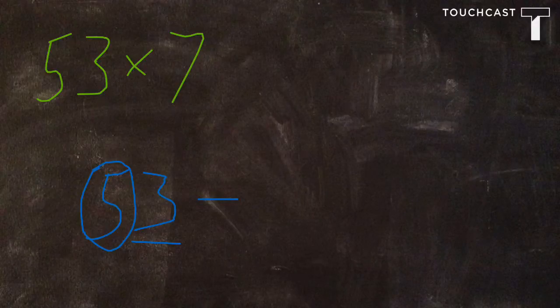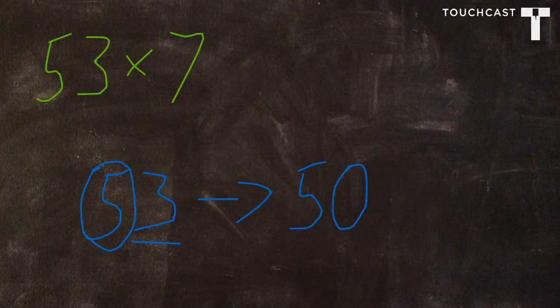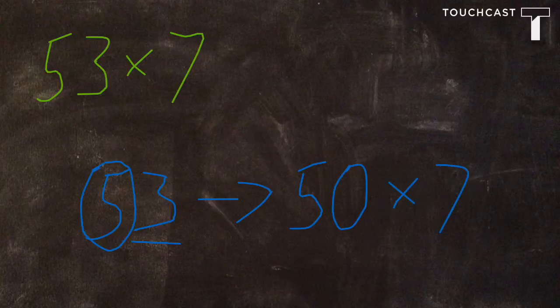And that 3 tells us to rest. Since 53 is between 50 and 60, it's going to rest down at the 5, which is 50. So we're going to take 50 times 7, and that gives us our estimate.